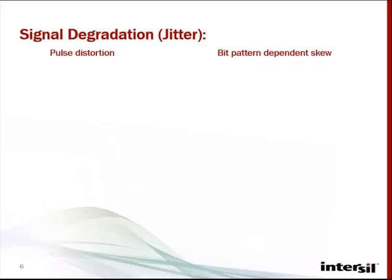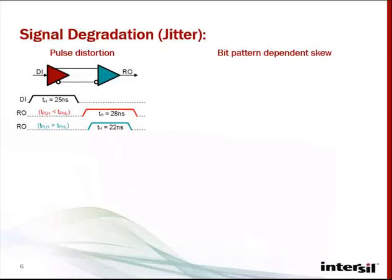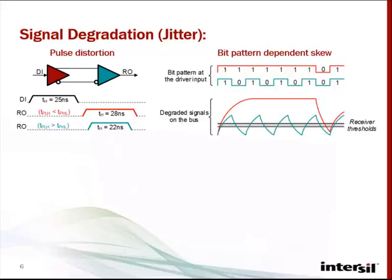Signal degradation in the form of jitter is caused by driver and receiver pulse distortion and pattern-dependent cable skew. Skew is the difference between the propagation delays between the rising and falling edges of a pulse as it passes through the driver or receiver. Bit-pattern dependency cable skew is the variation of signal rise and fall times on the bus caused by varying bit sequences of ones and zeros.